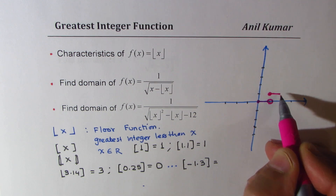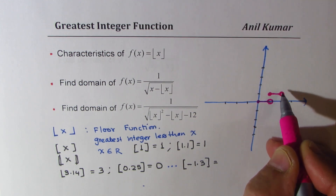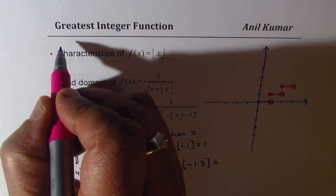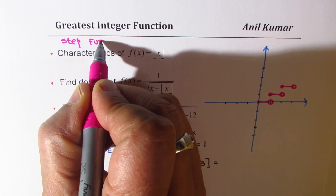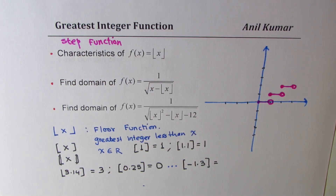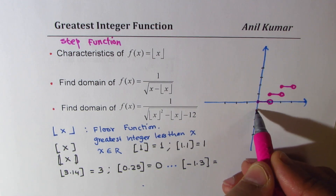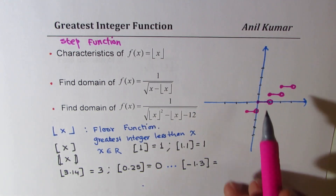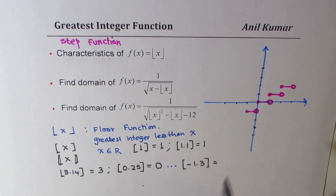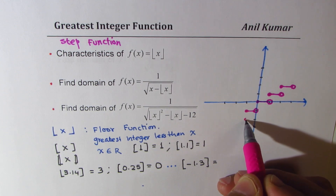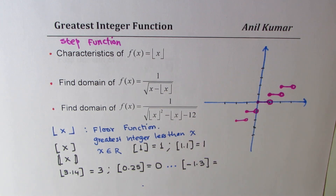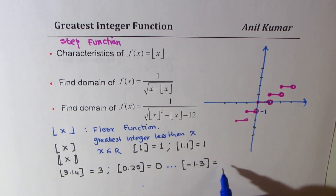It continues in steps — that's why we also call it a step function. Looking at the negative side: if you are confused about what happens at minus 1.3, the graph shows that if it is minus 0.0-anything, then it is minus 1. So the value of minus 1.3 is actually minus 2 — we go to the left side of the integer.